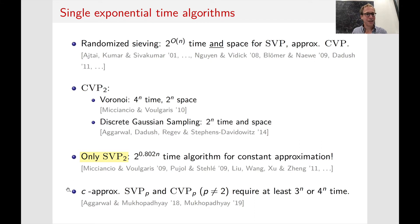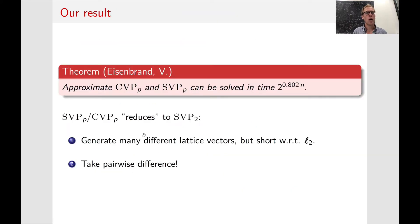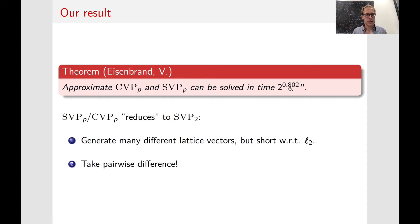These are the previous fastest algorithms for constant approximation, but we show that we can do all of these problems in this time. Specifically, we show how to solve a constant factor approximate CVP and SVP for any p in time 2^(0.802n). The way we do this is essentially by reducing these problems for constant approximation factors to the algorithm that solves SVP with respect to L2 in this time.